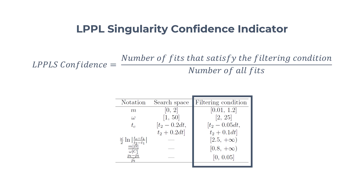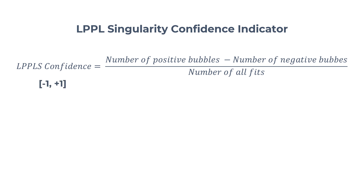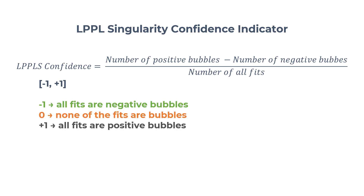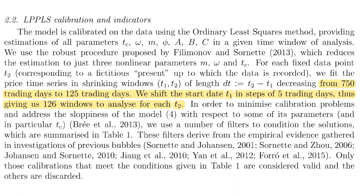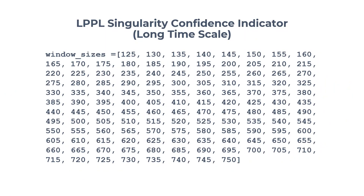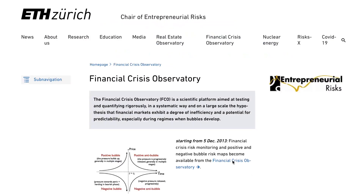Those values were derived from historical data. To account for negative bubbles, bubbles that have a negative size are counted as minus 1. Therefore, the confidence score takes values between minus 1 and 1, where minus 1 means all the fits were negative bubbles, and 1 means all of the fits were positive bubbles. The higher the value, the likelier a crash is about to occur. The authors use window sizes evenly spaced between 125 and 750 trading days, with a size difference of 5 days between consecutive windows. Computing that many fits for every single time step is very computationally expensive. There is also a short timescale version spanning windows between 20 to 125 days, but it is highly unstable. This is definitely not a suitable indicator for frequent trading.